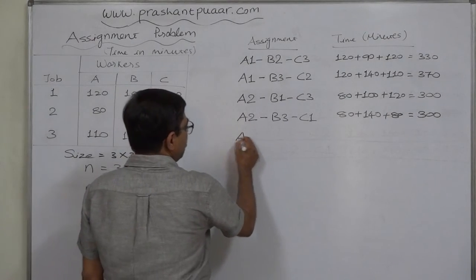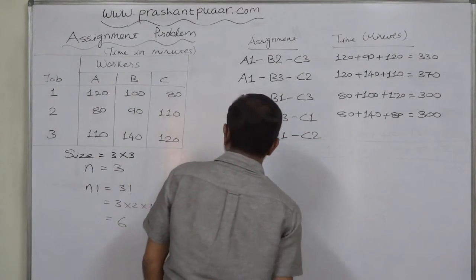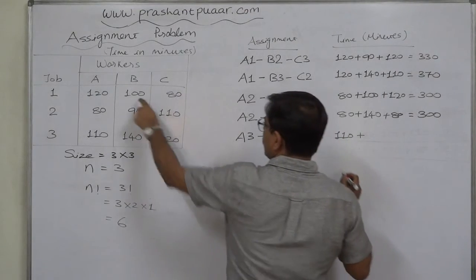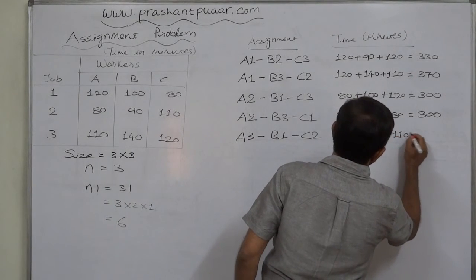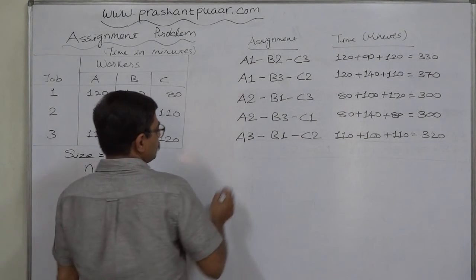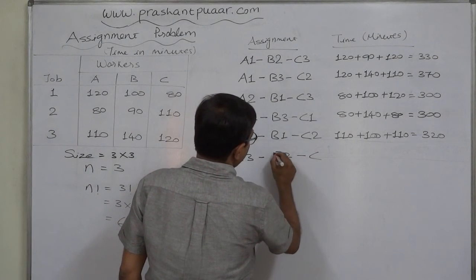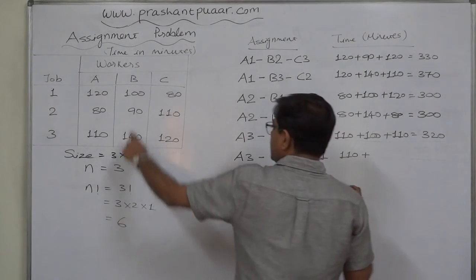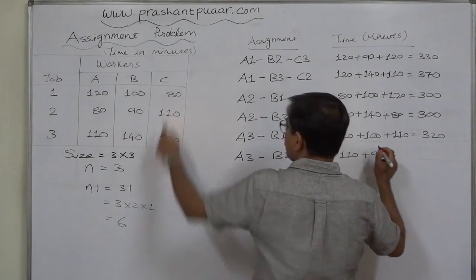Fifth assignment: A is assigned job 3, B gets job 1, and C gets job 2. Time is 110 minutes for A, plus 100 minutes for B, plus 110 minutes for C — total 320 minutes. Sixth and final assignment: A gets job 3, B gets job 2, and C gets job 1. Time is 110 minutes for A, plus 90 minutes for B, plus 80 minutes for C — total 280 minutes.